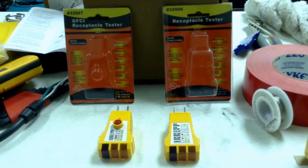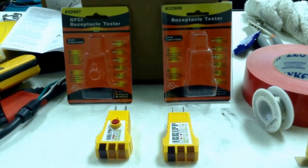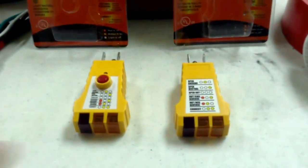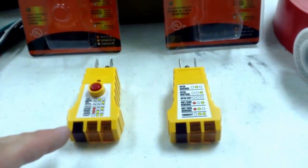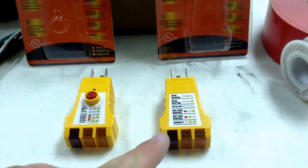So here we can see the Harbor Freight item 32907 and 32906. Really the only difference between the two is that this one will test a GFI receptacle which is a ground fault interrupt and this one will not.